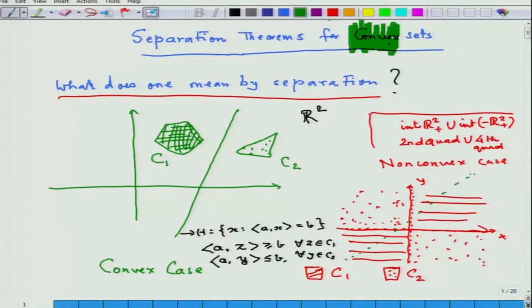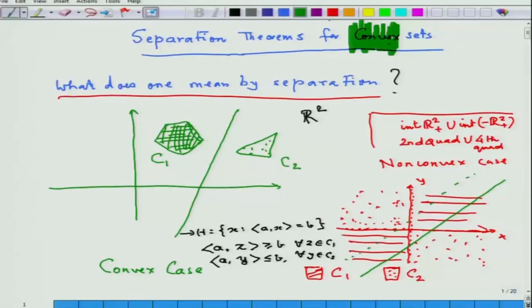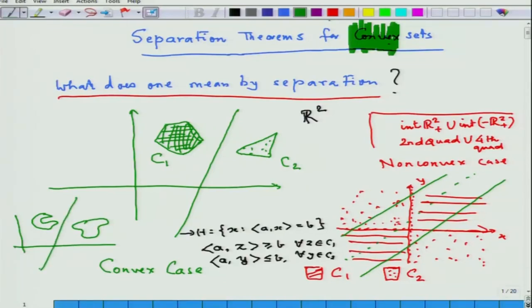Whatever line you draw, you cannot put one set into one half-space and the other set into the other half-space — it really does not matter. This need not hold for the general non-convex case. Of course, there can be instances where separation can hold, but it will never hold in general for every pair of disjoint non-convex sets. For every pair of disjoint convex sets, however, this will always hold — and that is our goal.